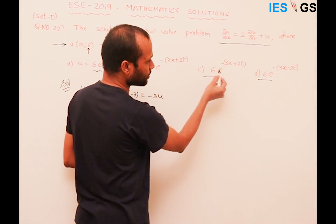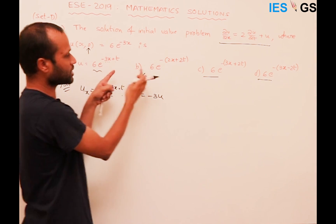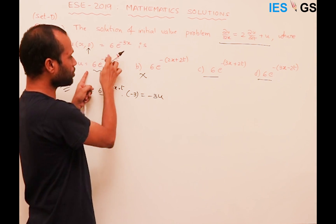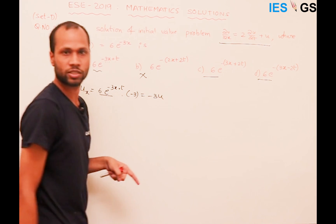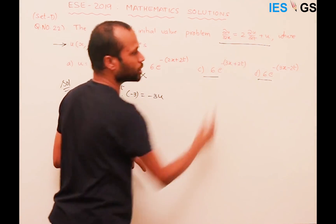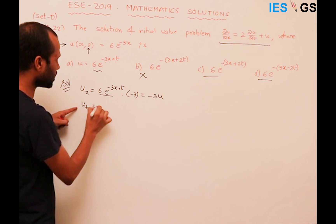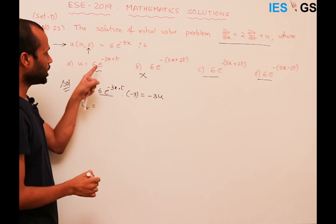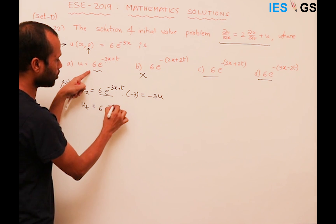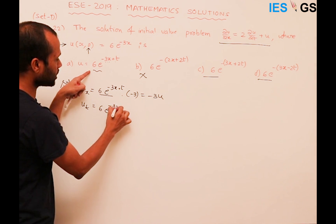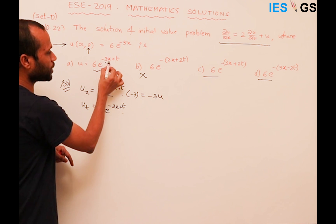In all remaining options, ∂u/∂x will also be −3u, because with respect to x everything is the same — 6e^(−3x). Only ∂u/∂t will differ between the options. Now computing ∂u/∂t using the chain rule: 6 · e^(−3x + t) · (differentiate the exponent with respect to t).